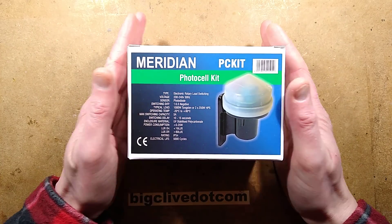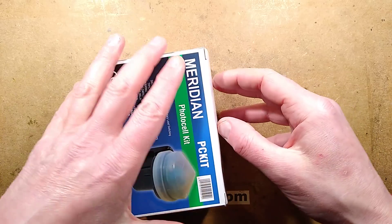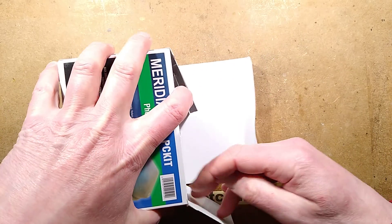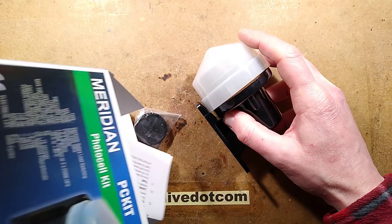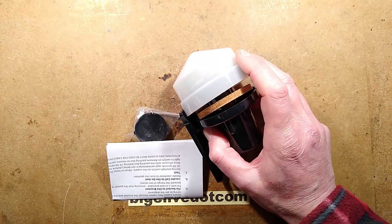Let's take a look at a photocell kit. This is designed for mounting outdoors and it will control external lighting or internal lighting. You could also mount it indoors in a well illuminated area from external illumination.